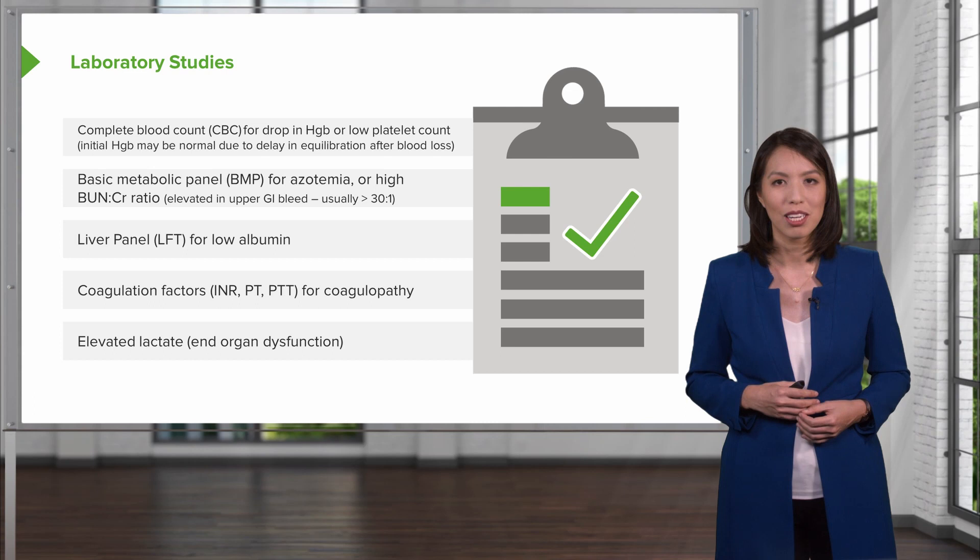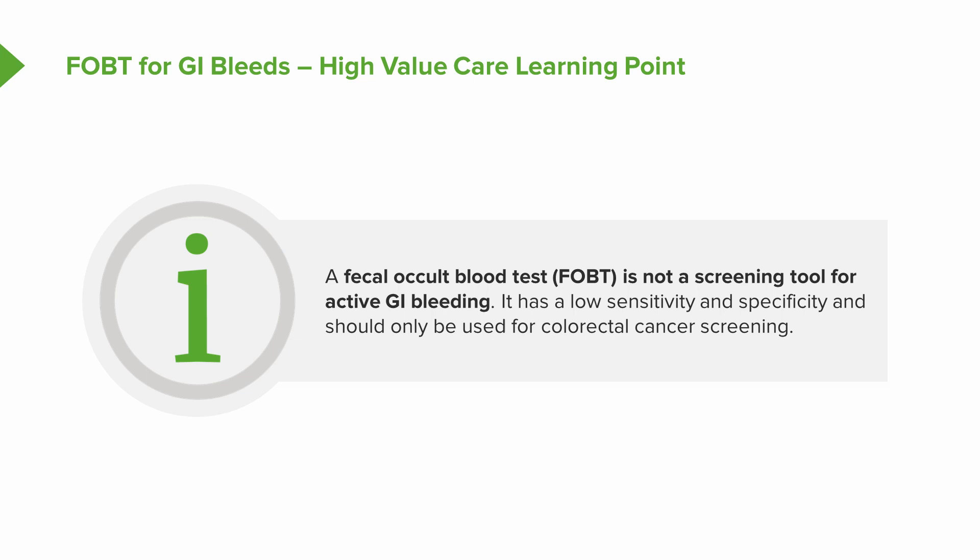As a high value care tip regarding fecal occult blood testing or FOBT: this test should not be used to evaluate active GI bleeding. It has very poor sensitivity and specificity for active GI bleeds and should only be used in screening for colorectal cancer.